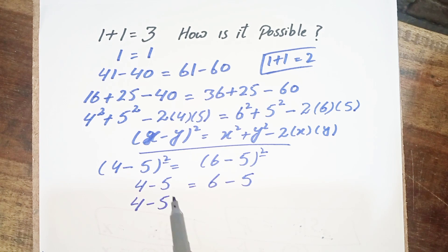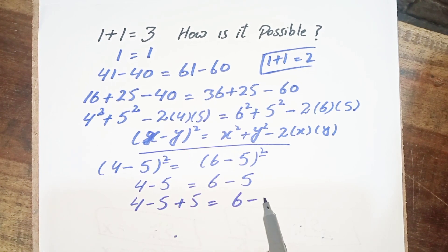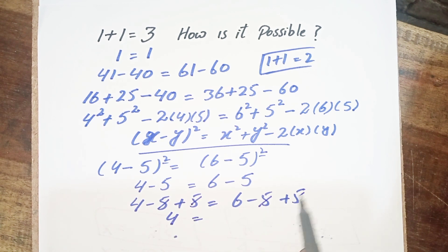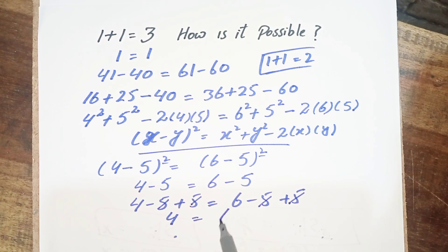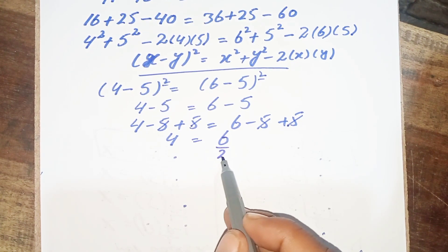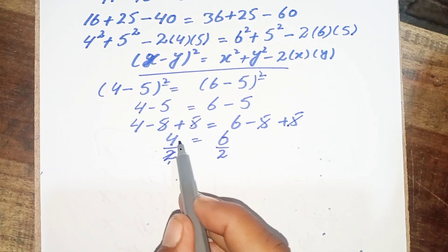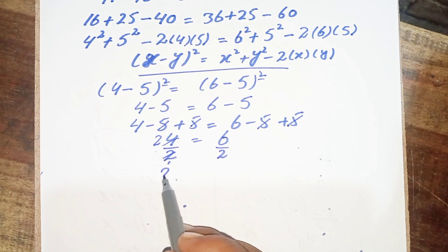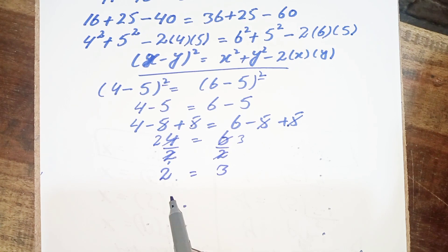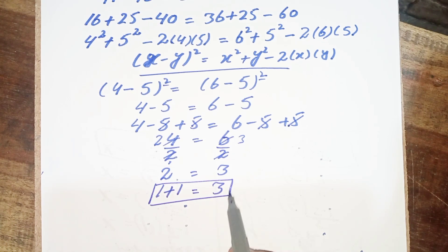On the left side, minus 5 plus 5 cancels and we are left with 4. On the right side, minus 5 plus 5 cancels and we are left with 6. Now we divide both sides by 2: the left side becomes 2, and the right side becomes 3. We substitute 2 as 1 plus 1, so 1 plus 1 equals 3 — and my lecture is proved.